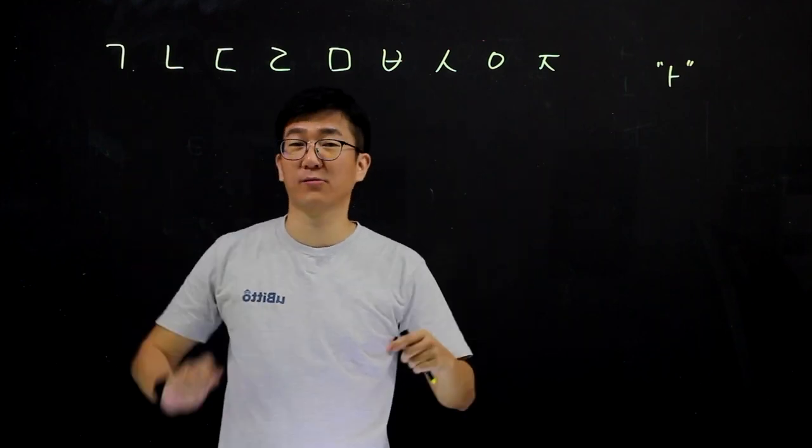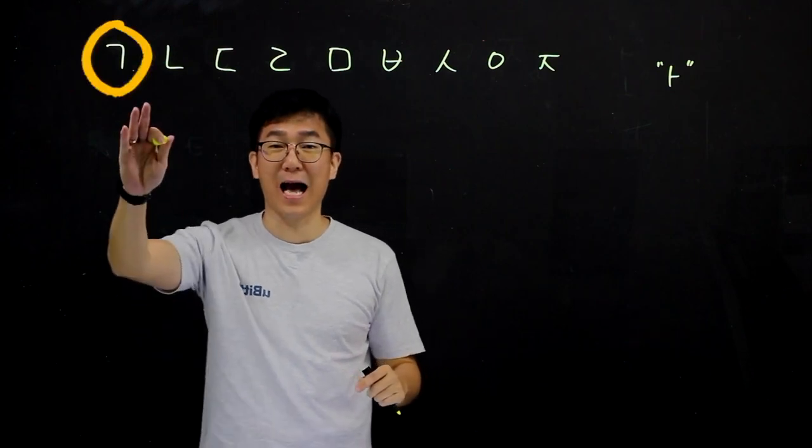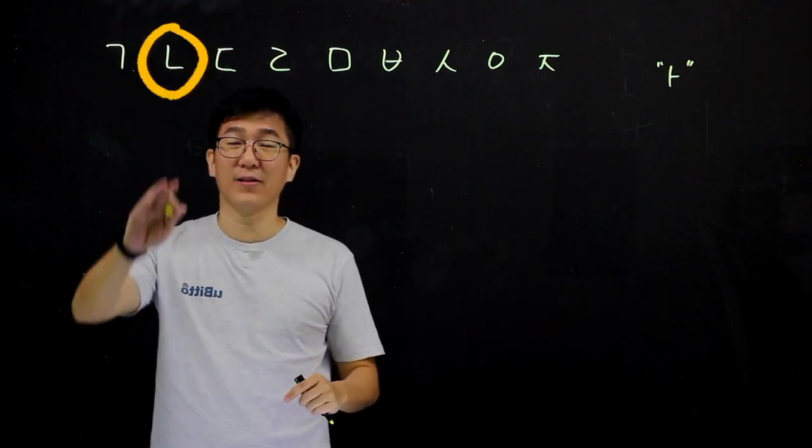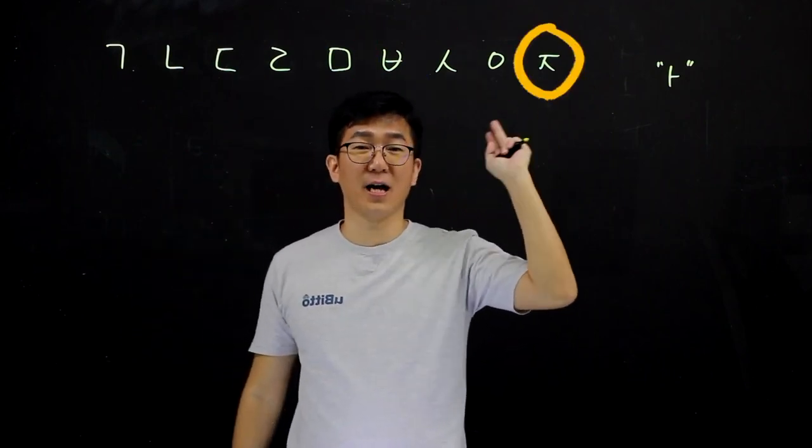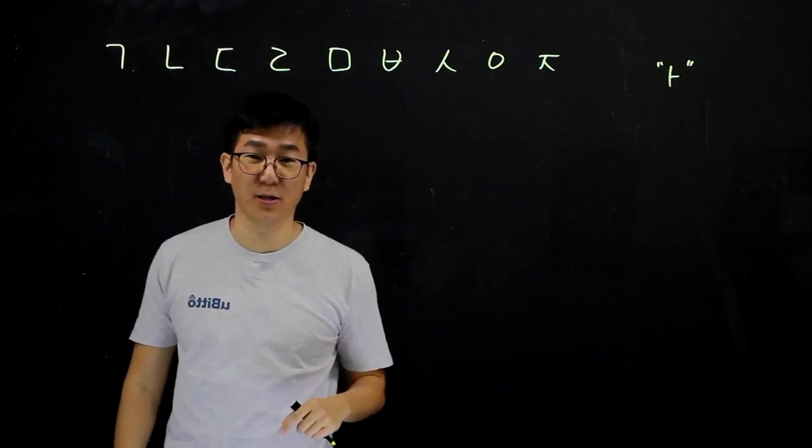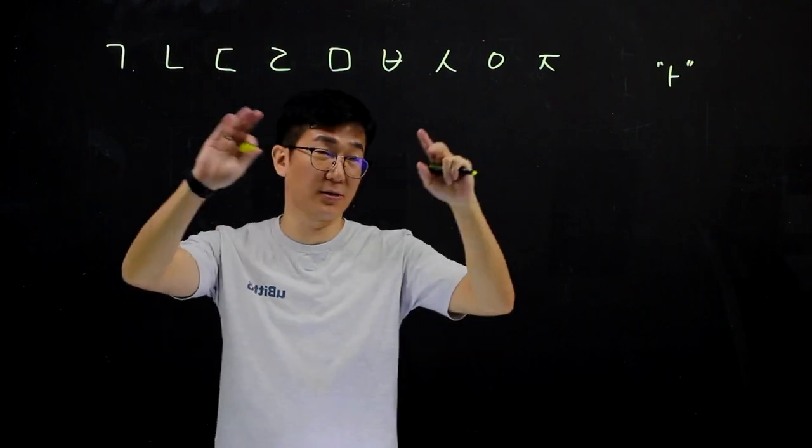So, repeat after me. Ka, ka, na, da, ra, ma, ba, sa, a, ja. Okay, I know it's a bit fast. But I will tell you how it sounds like.